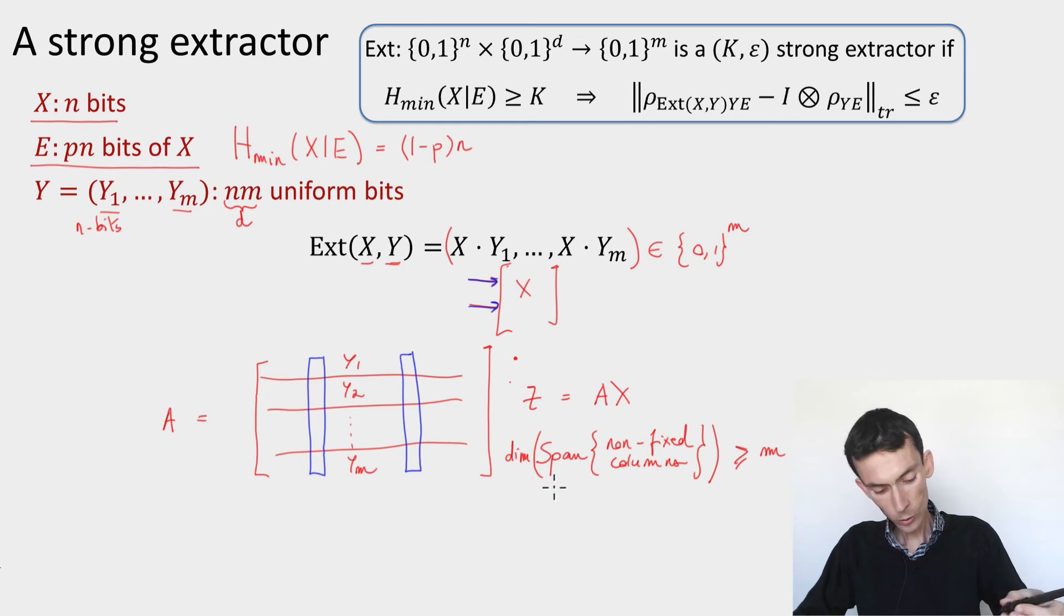When is this going to be the case? Well if the number of non-fixed columns, which is 1 minus p times n, is greater than m, let's say much greater for safety, because we're choosing these columns at random, it could always be the case that all these y's are chosen to be zeros, and then of course we'd have a problem. But with high probability, if we think of choosing y by columns, as long as the number of columns that are not fixed by the eavesdropper side information, which is 1 minus p times n, is much larger than m, then they will span the whole space, and so we'll get a uniformly random output.